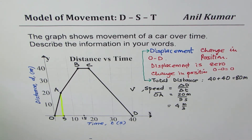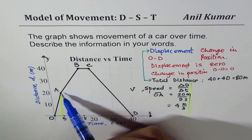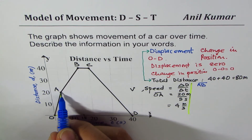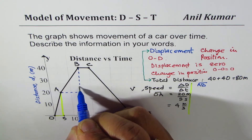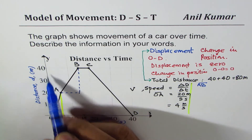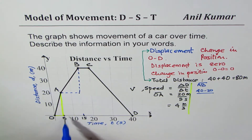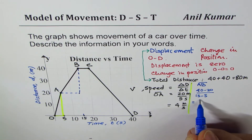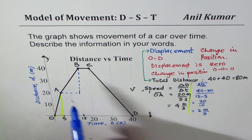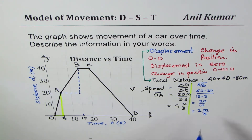That is how you calculate speed from a distance-time graph. Now let's calculate speed for segment A to B. Drawing a triangle: change in distance is 40 minus 20, divided by change in time which is 15 minus 5. That gives 20 divided by 10, which is 2 meters per second. The change in y is in meters and change in time is in seconds, so units are meters per second.